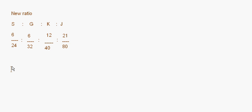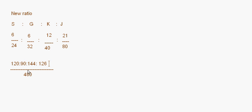Again we will have to take a common denominator. The LCM of all 4 numbers — 24, 32, 40 and 80 — works out to 480. So: 24 goes 20 times in 480, so 6 × 20 = 120; 32 goes 15 times, so 6 × 15 = 90; 40 goes 12 times, so 12 × 12 = 144; and 80 goes 6 times, so 21 × 6 = 126. So this means it is 120 : 90 : 144 : 126.